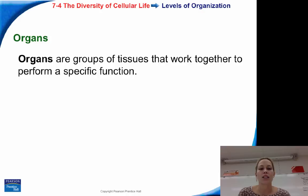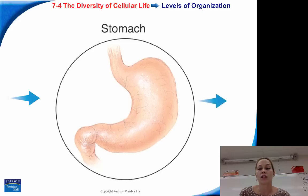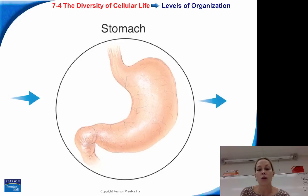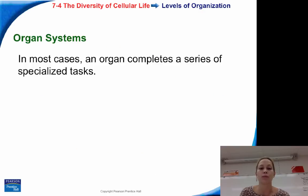Organs are our next level of organization. Organs are a group of tissues that work together to perform a specific function. The stomach, for example, is a group of tissues — including nervous tissue and muscle tissue — working together. The function of the stomach is to break down proteins using the enzyme pepsin, along with peristalsis for mechanical breakdown of food.